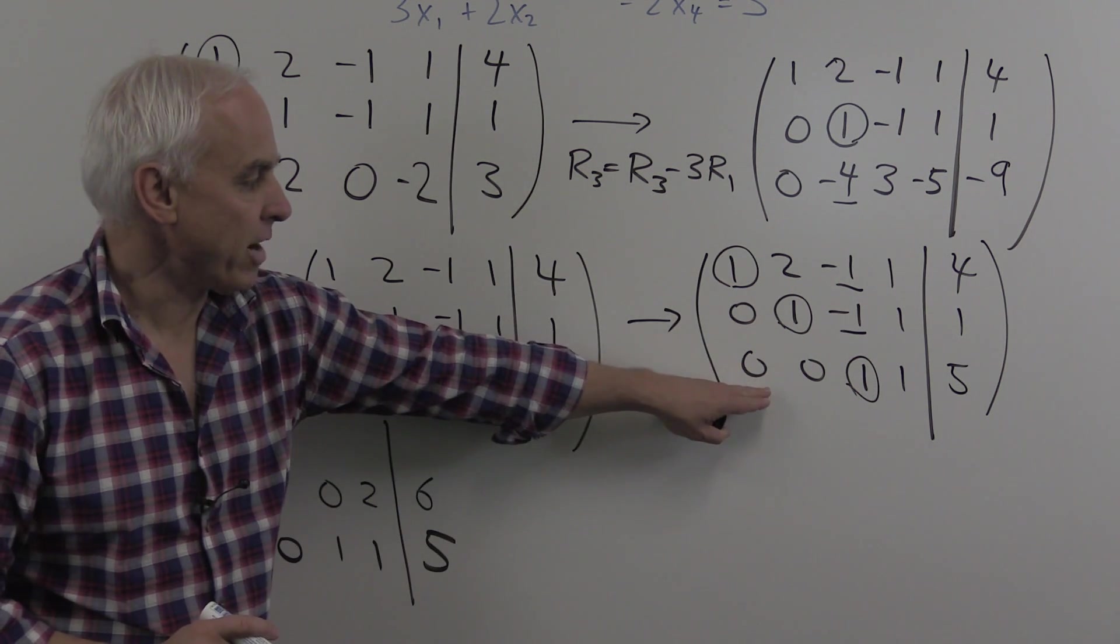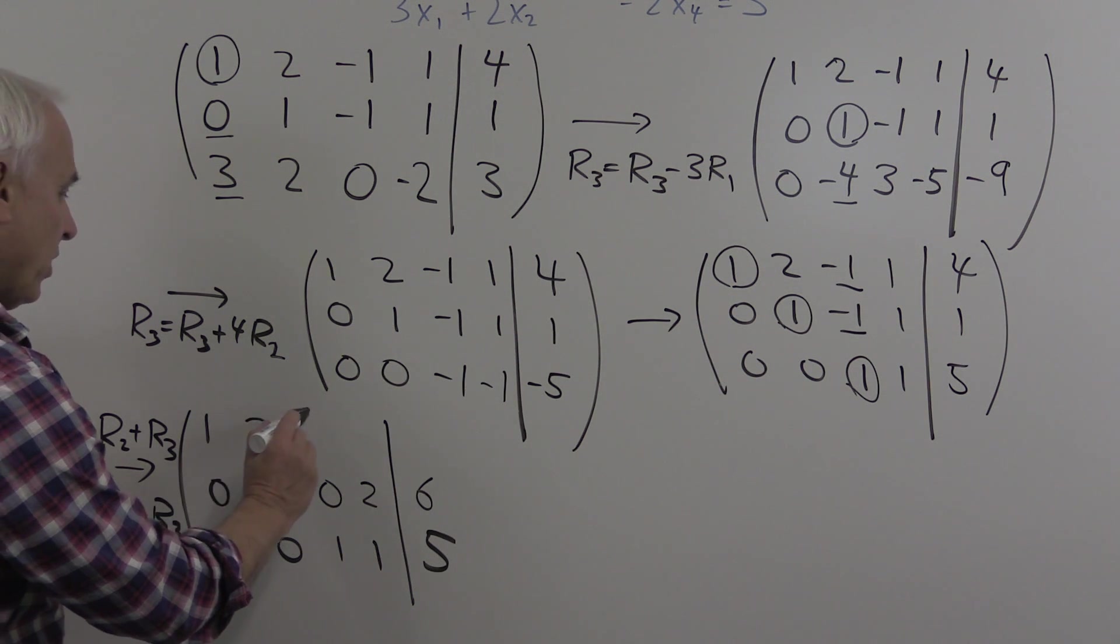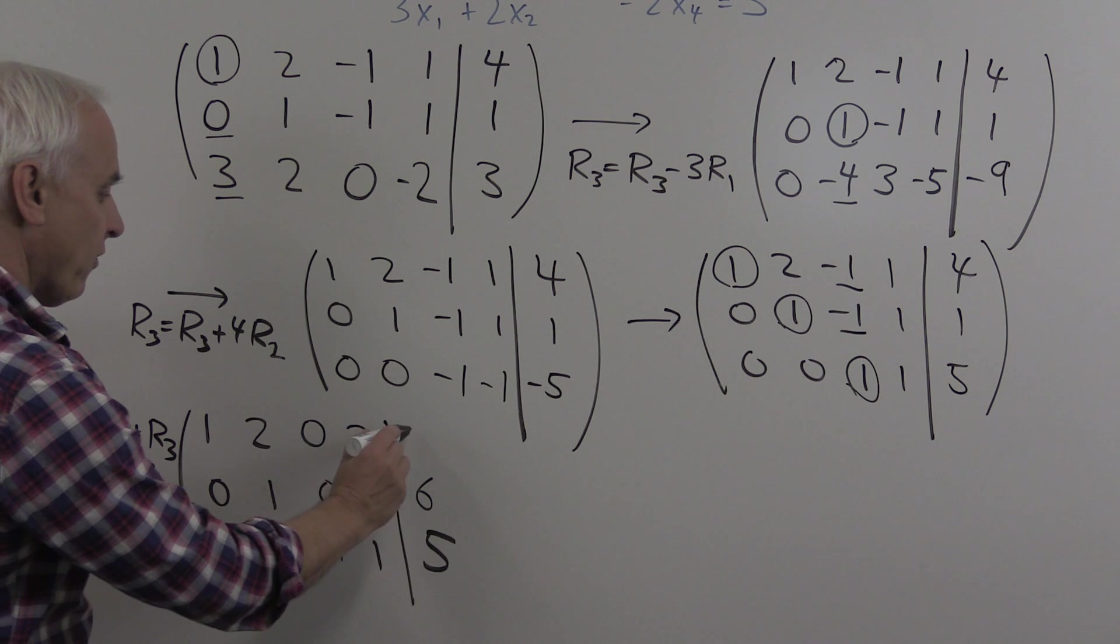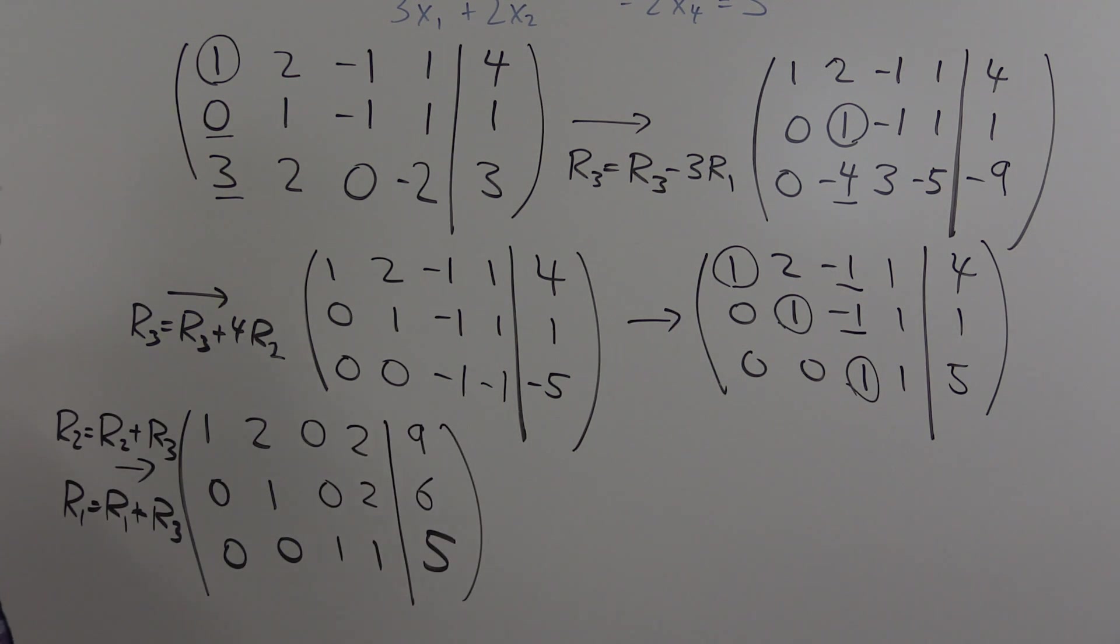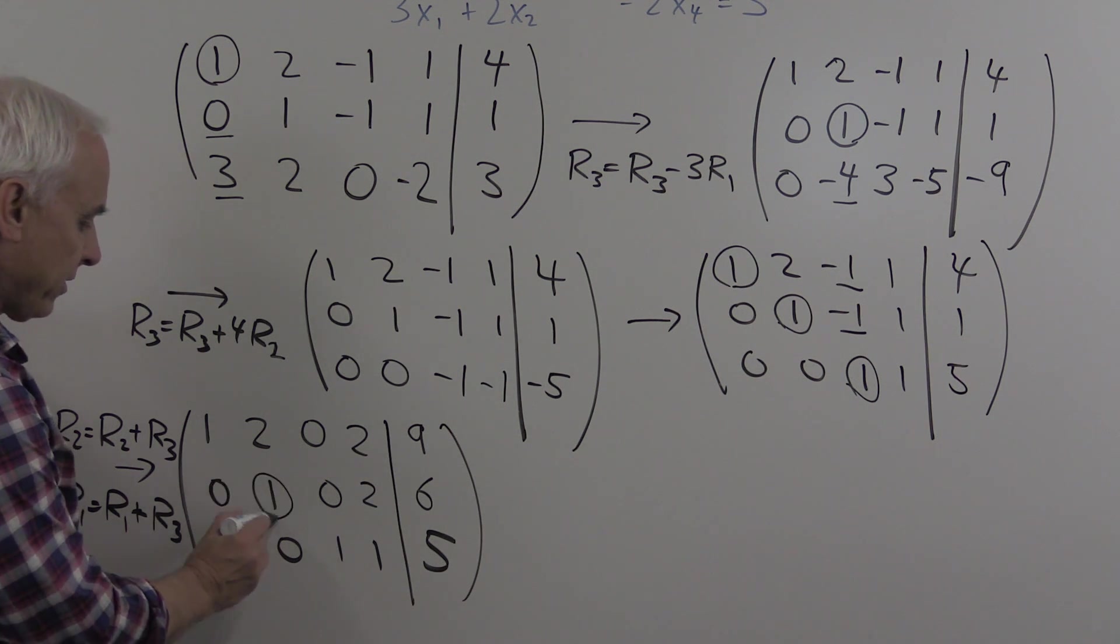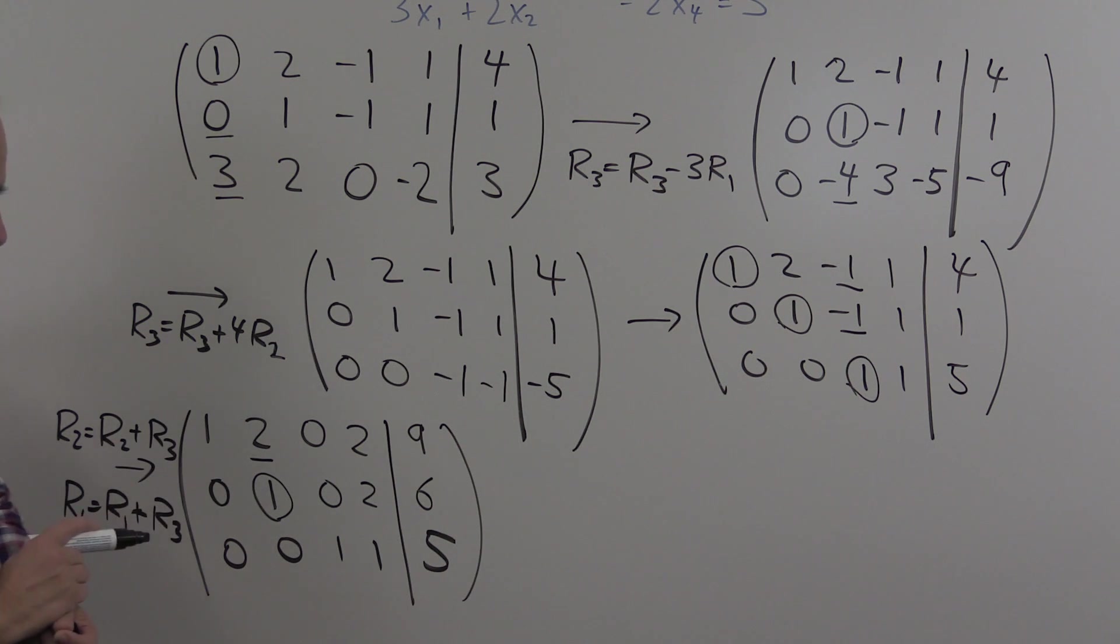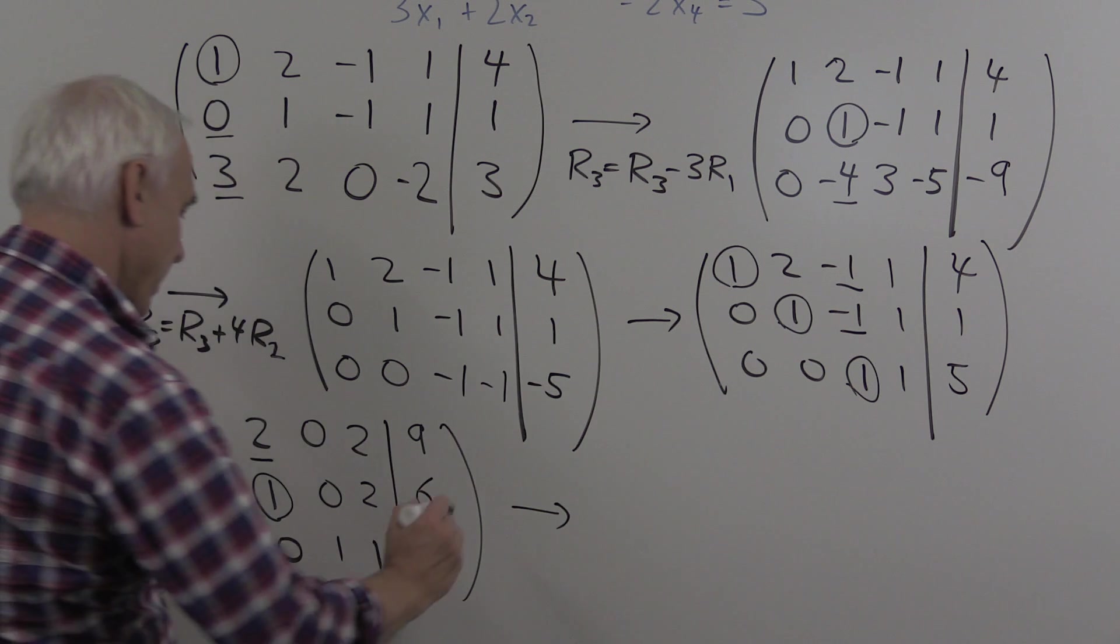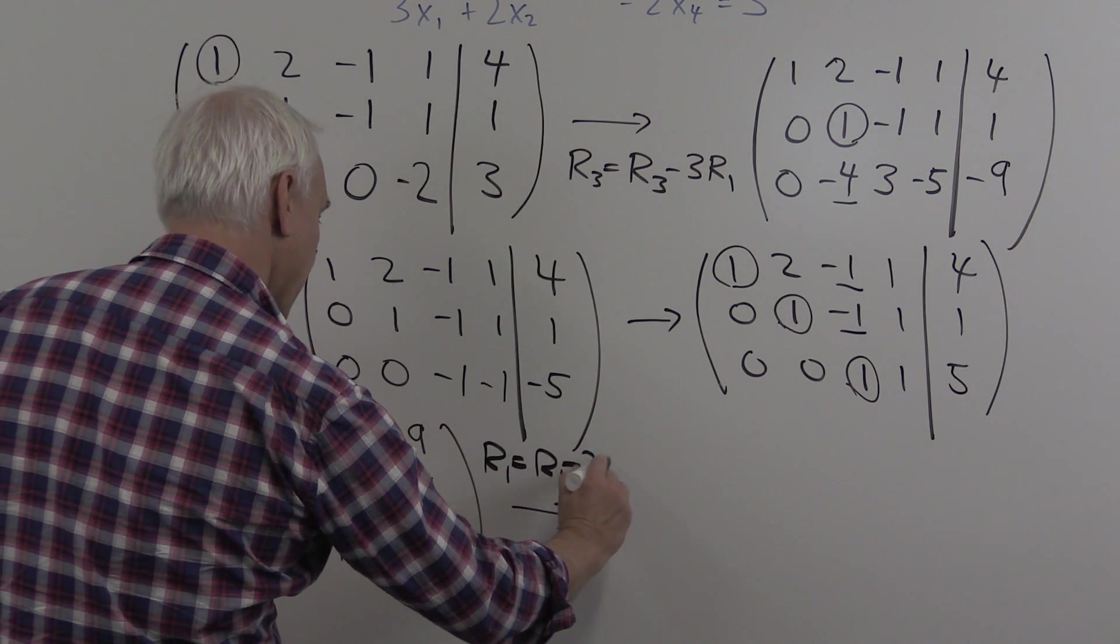Now we're going to take this 1 here and use it to eliminate the entry above it. So row 1 will now be row 1 minus 2 times row 2.